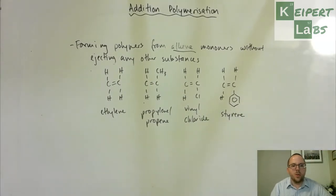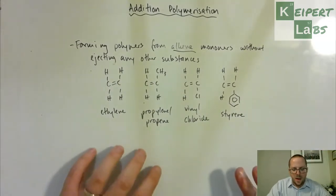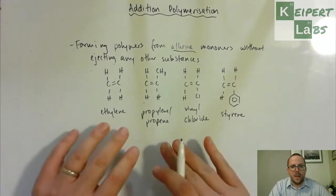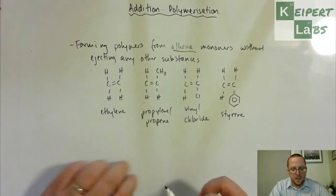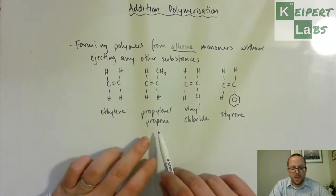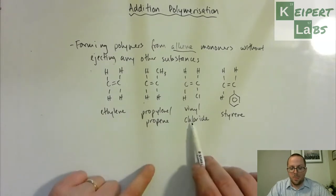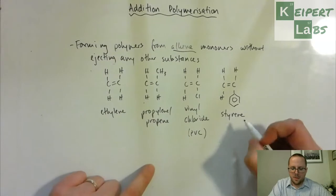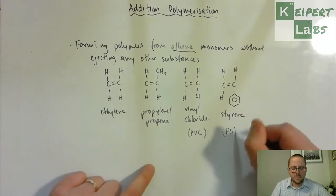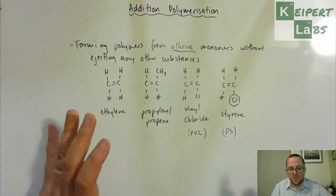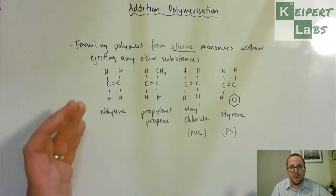So these are all commercially important monomers that produce some of the plastics that we know about and that we use a lot: polyethylene, polypropylene the basis of like your reusable green bags, polyvinyl chloride or PVC, and polystyrene. So there are other monomers out there that are of interest to us but these are some of the ones that we would come across more commonly.